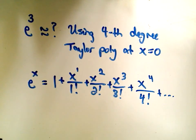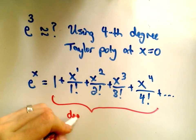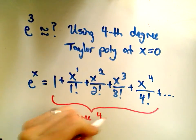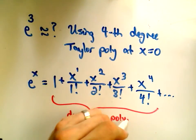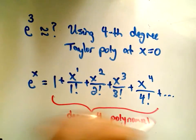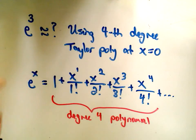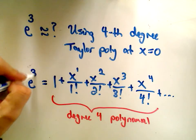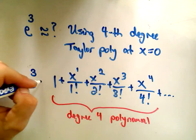The idea is you just basically go out until you have a degree 4 polynomial. So if I simply keep these first four terms, I'm going to have a degree 4 polynomial. That's what we'll use to approximate e to the x, or in this case e to the third. If we want to approximate e to the third, just replace your x with your 3.